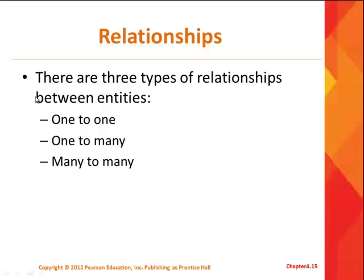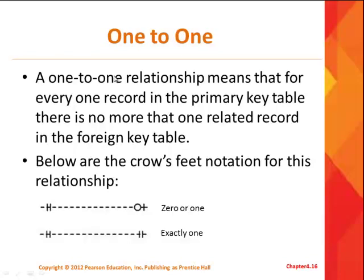We're going to go through three types of relationships between entities. We've seen a lot of one-to-many — that's the most common. There are also one-to-one relationships and many-to-many relationships. Many-to-many can only exist in the logical design stage; if we want to implement a real physical database, we have to break them apart. The one-to-one relationship means for every record in the primary table, there's one related record in the foreign key table. Here's the crow's feet notation for it — you can have a zero-or-one relationship or an exactly one-to-one.